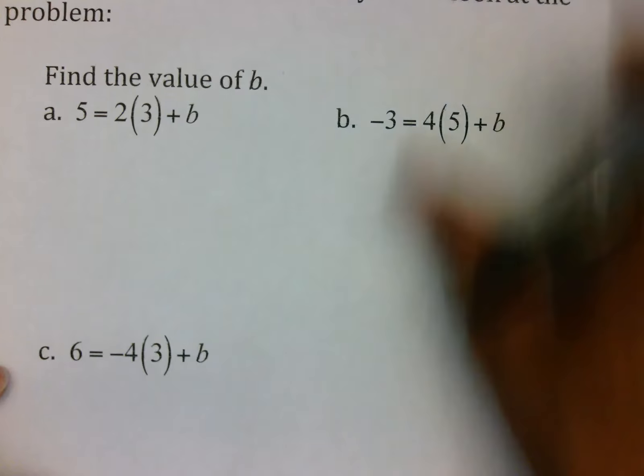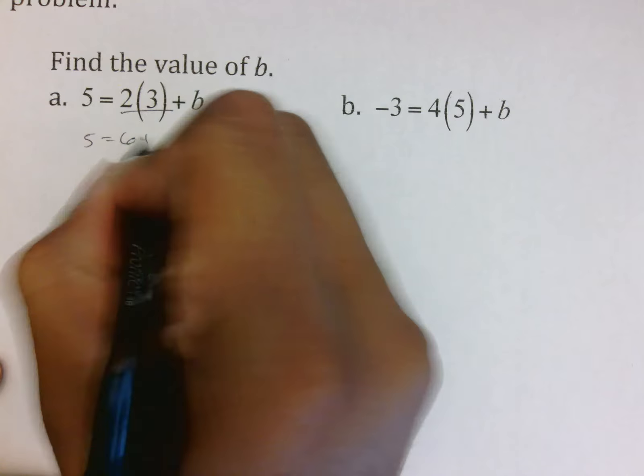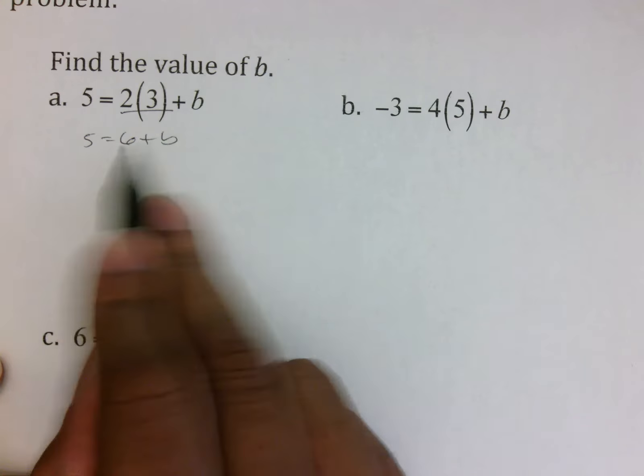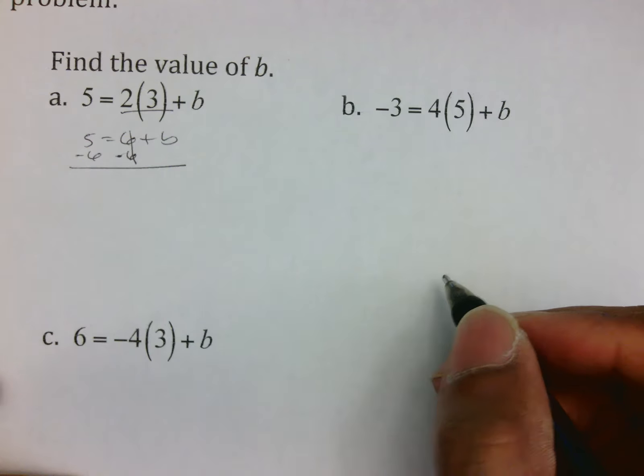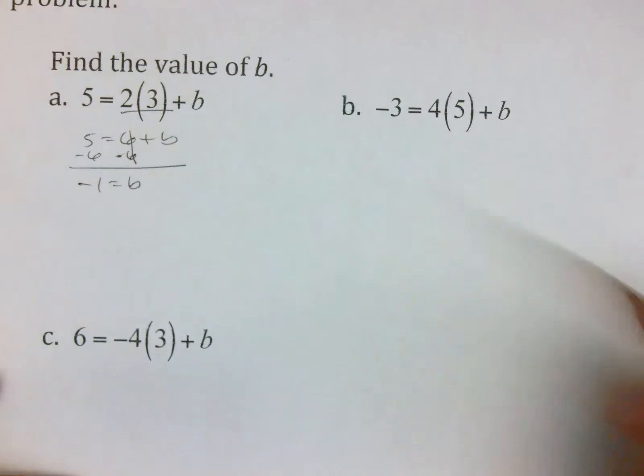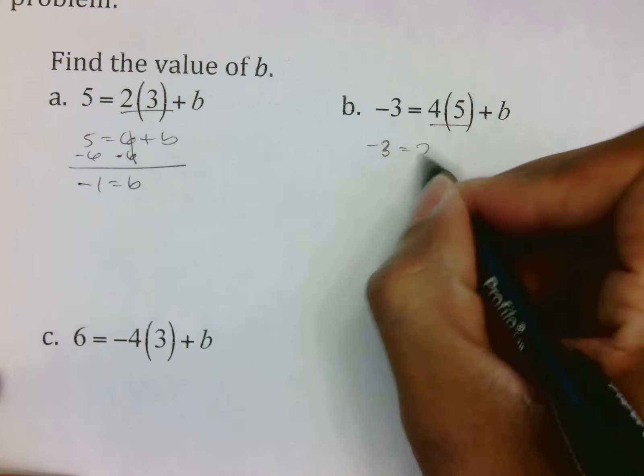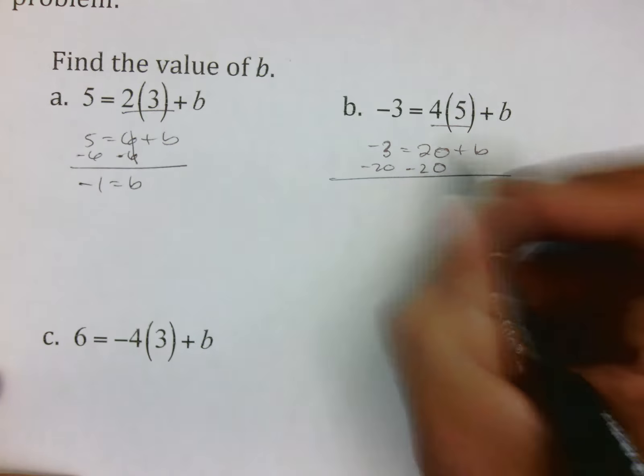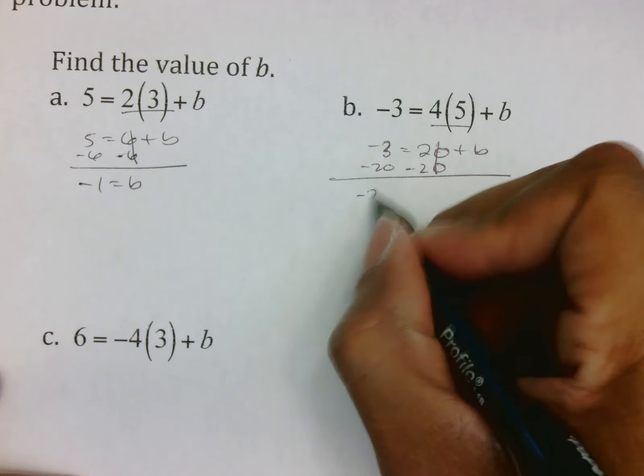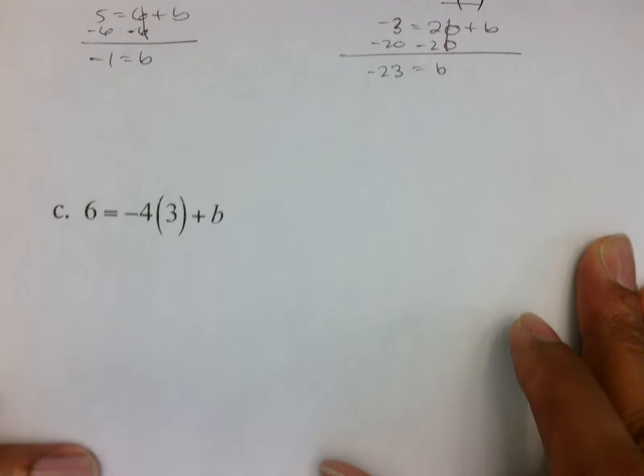This is what it's going to be asking you to do: find the value of b. So the first thing we would do is multiply 2 times 3. And what we learned is that to move a number away from a value that's being added, you use the opposite of that value. So we will subtract 6 from both sides. Remember that your 6 is canceled and 5 minus 6 is negative 1. You just found b. On this problem, the first thing we want to do is multiply 4 and 5. So bring down your negative 3 equals 20 plus b. We learned that to get rid of this 20, we have to use its opposite. Those two cancel out. Negative 3, negative 20, make negative 23. And you have found the value of b.